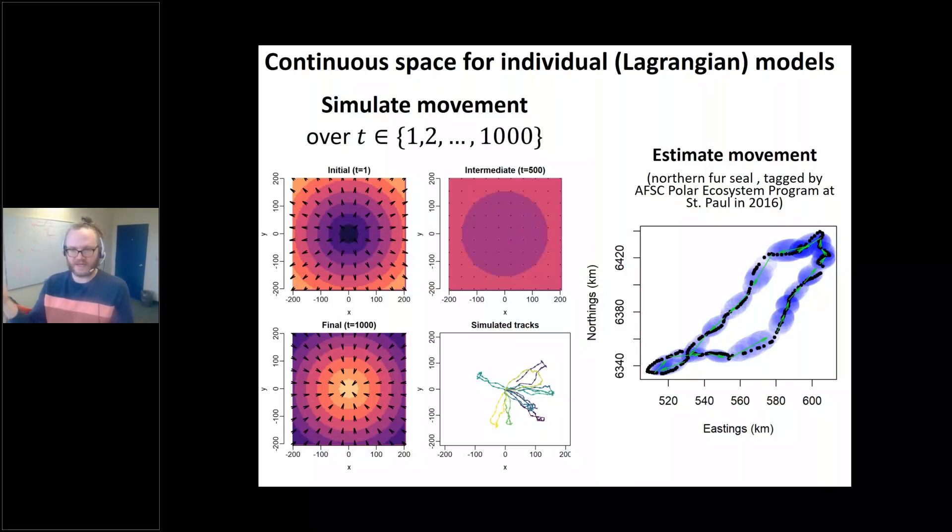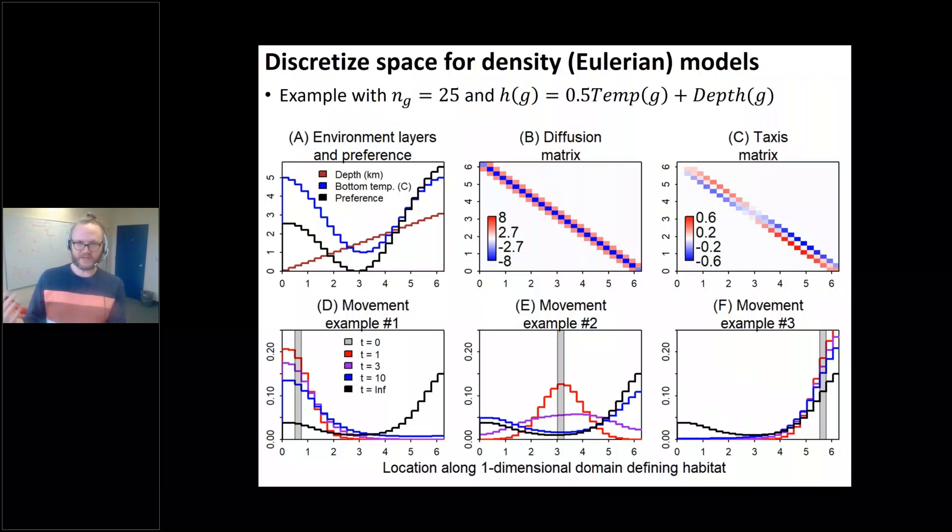If you imagine you've got a central place forager that starts out at X and Y of zero at the center of this top left panel, the vector field is pointing away from that point of origin at an initial time. You can simulate a track from that partial differential equation where they tend to move away for 500 time intervals, and then they move back to the point of origin for another 500 time intervals. You can simulate different tracks, foraging trips of a central place forager. It's efficient to do this. In that case, we're not estimating parameters. So it's very quick.